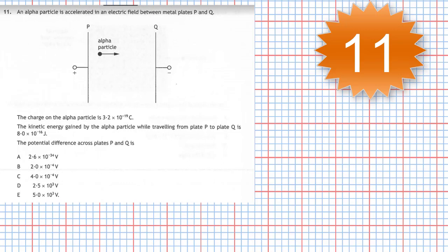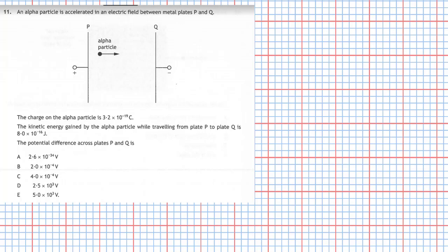Question 11 from section 1 of the 2019 Higher Physics examination. An alpha particle is accelerated in an electric field between metal plates P and Q. The charge on the alpha particle is 3.2 × 10⁻¹⁹ coulombs. The kinetic energy gained by the alpha particle while traveling from plate P to plate Q is 8.0 × 10⁻¹⁶ joules. We're asked to find the potential difference across the plates P and Q.